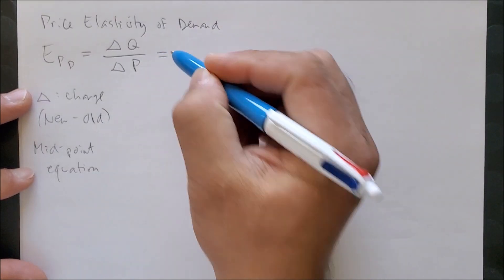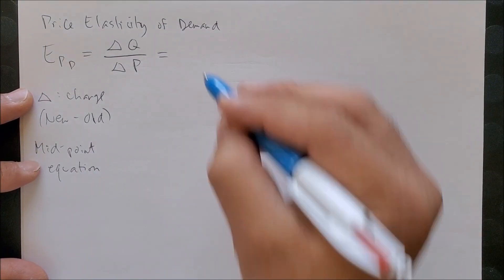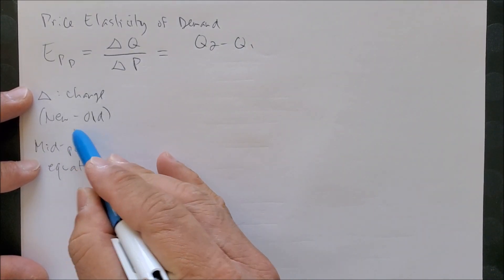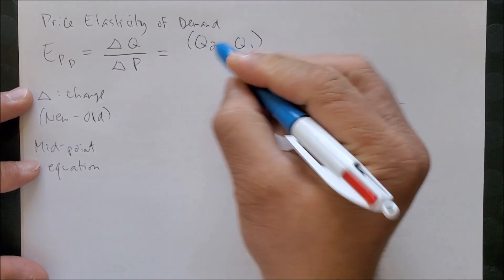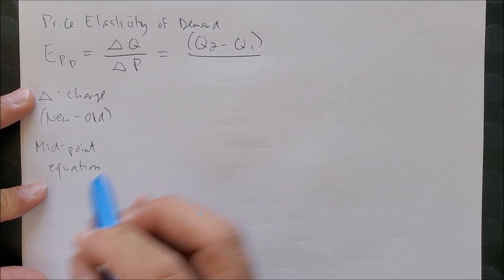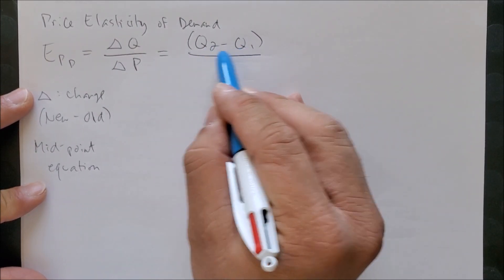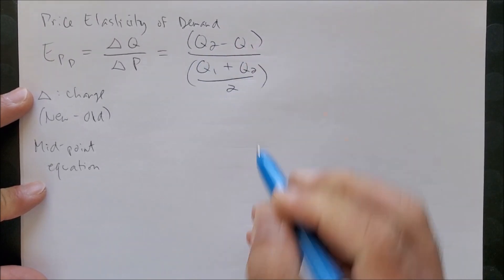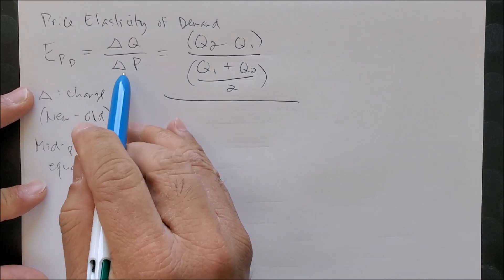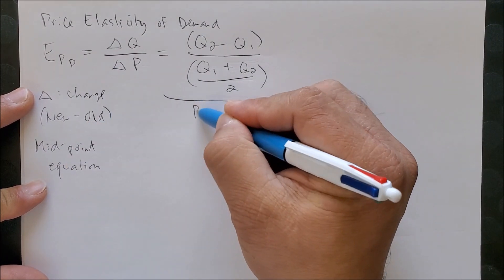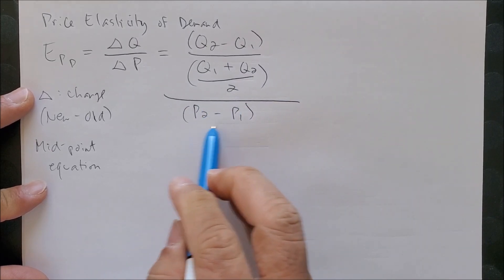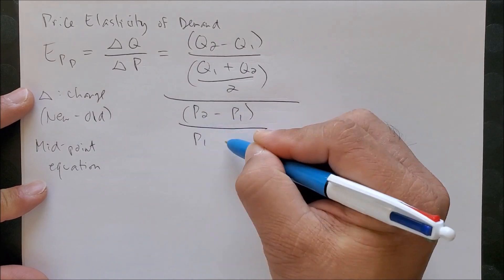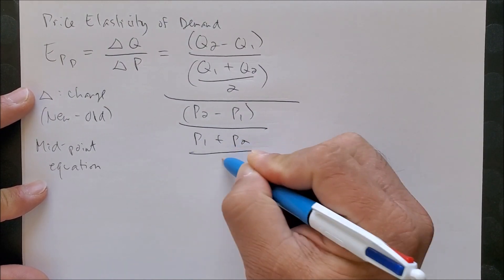As the equation shows, Q2 minus Q1 represents the change in quantity, but the midpoint allows us to find the average of both quantities: Q1 plus Q2 over 2. The same thing goes with price — P2 minus P1 is the change in price, over the average of both prices: P1 plus P2 over 2.